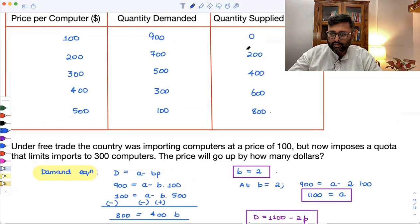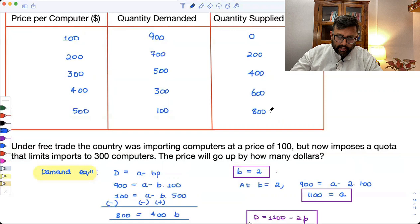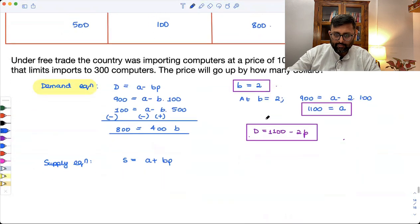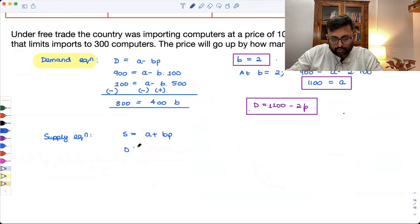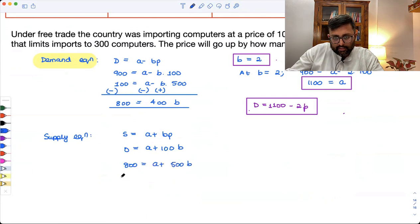A plus BP because that is what it is now. Supply and price are positively related. So you can pick up any two points. So supply equation has to pass through these points. These price and these quantity supplies, so I've picked up 0, 100 and 500. Like at price 100, 0 is supplied. At price 500, 800 is supplied. So I've picked up these two points and I've got this equation. So 0 is equal to A plus 100B. 800 equals to A plus 500B.